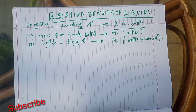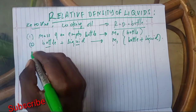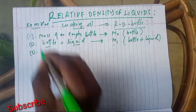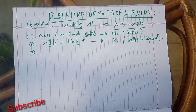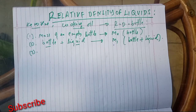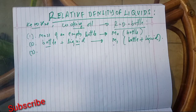After you have measured the mass of the bottle and liquid, you remove that liquid from the bottle, clean the bottle, and rinse it with water so it becomes pure. Then you pour some amount of water into that bottle.